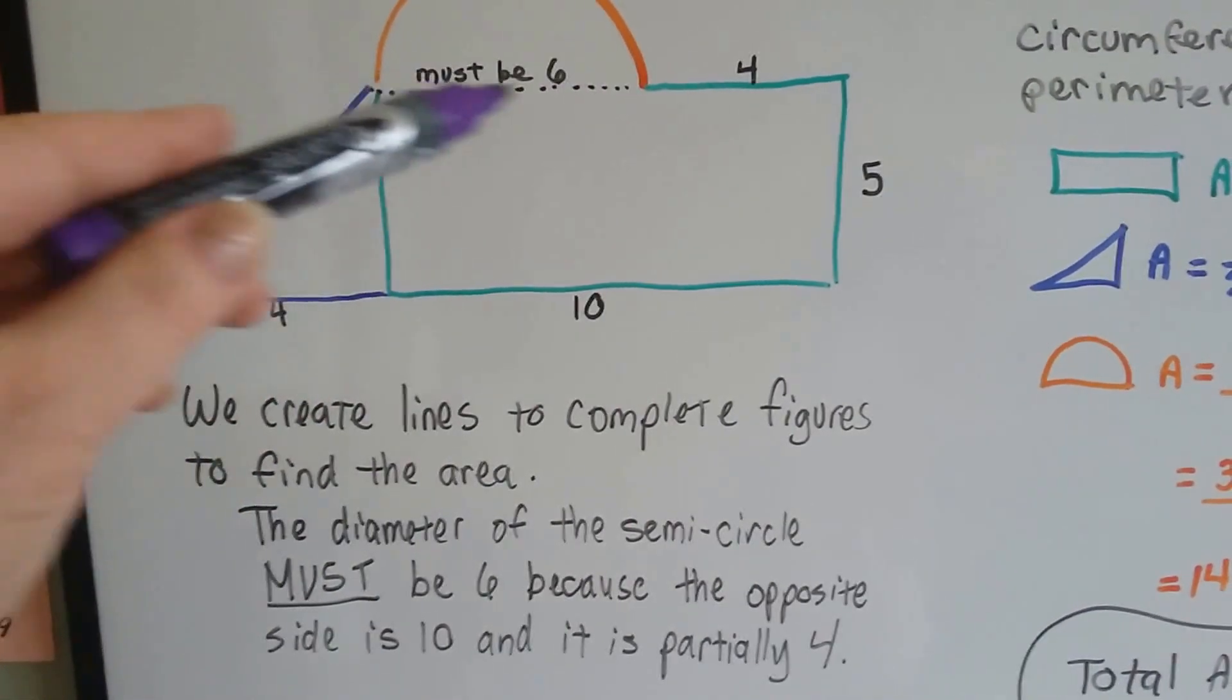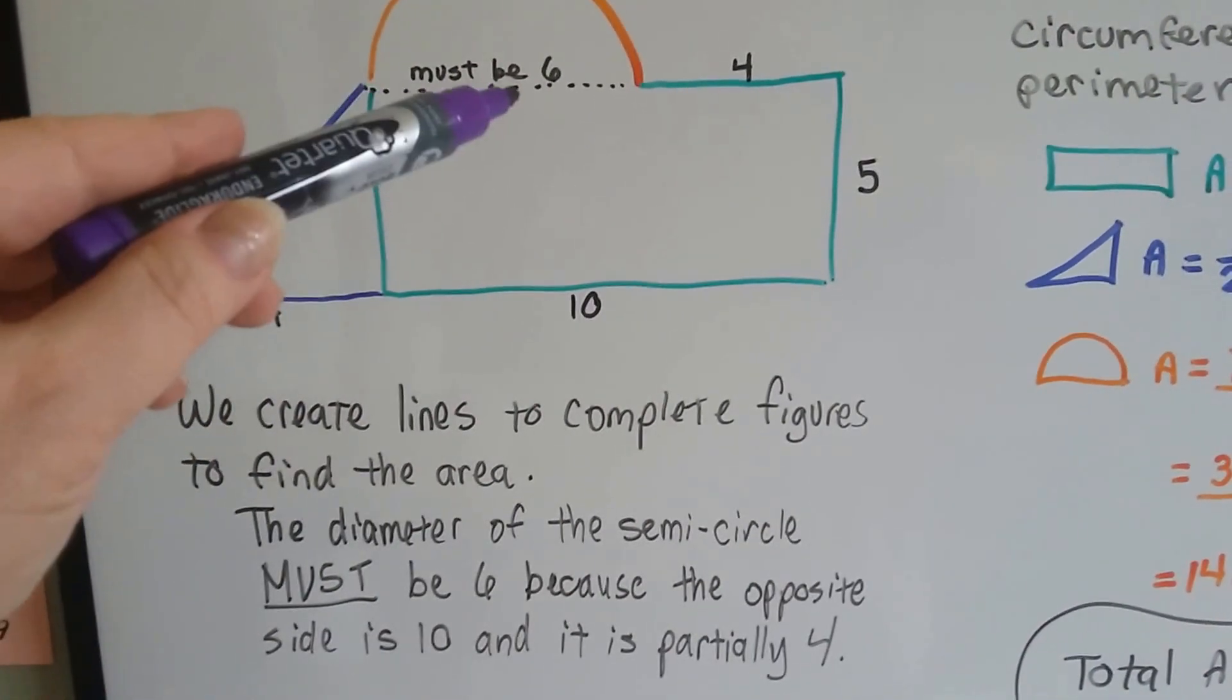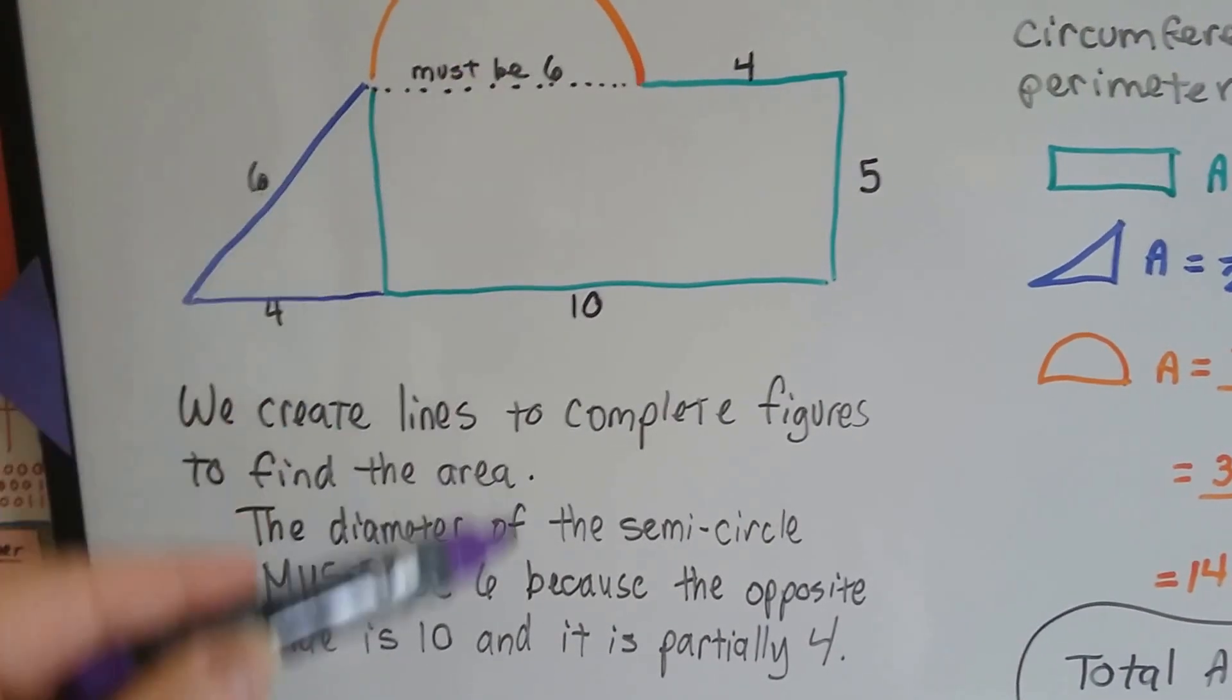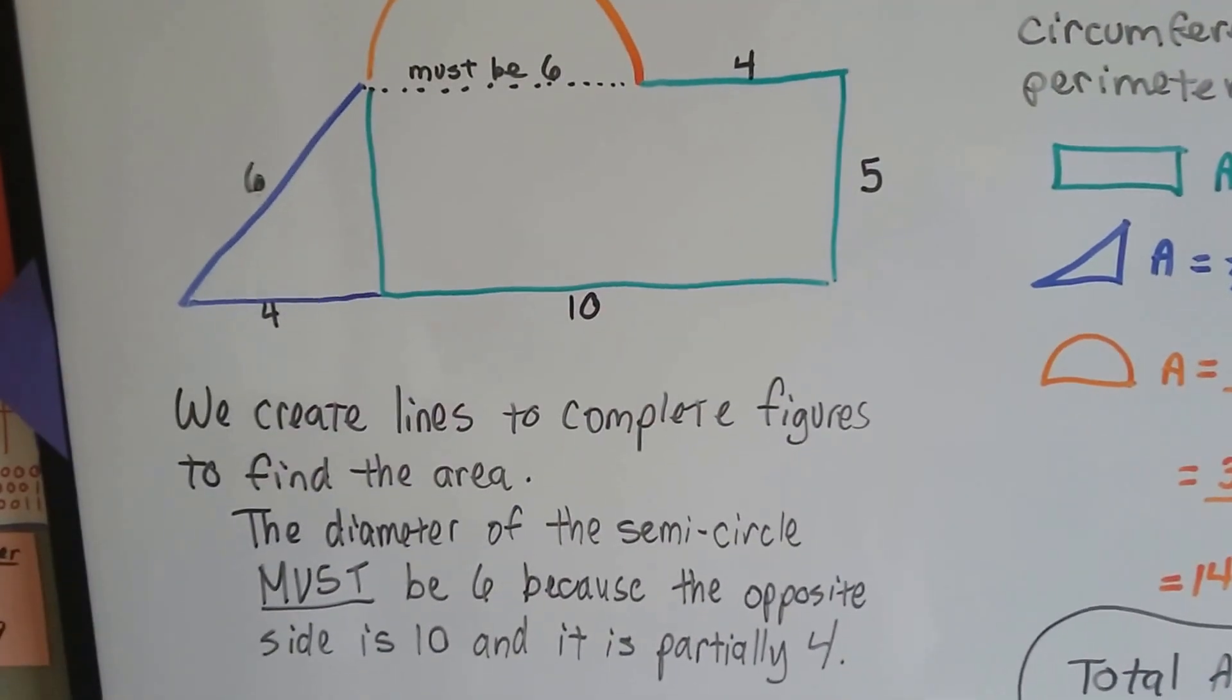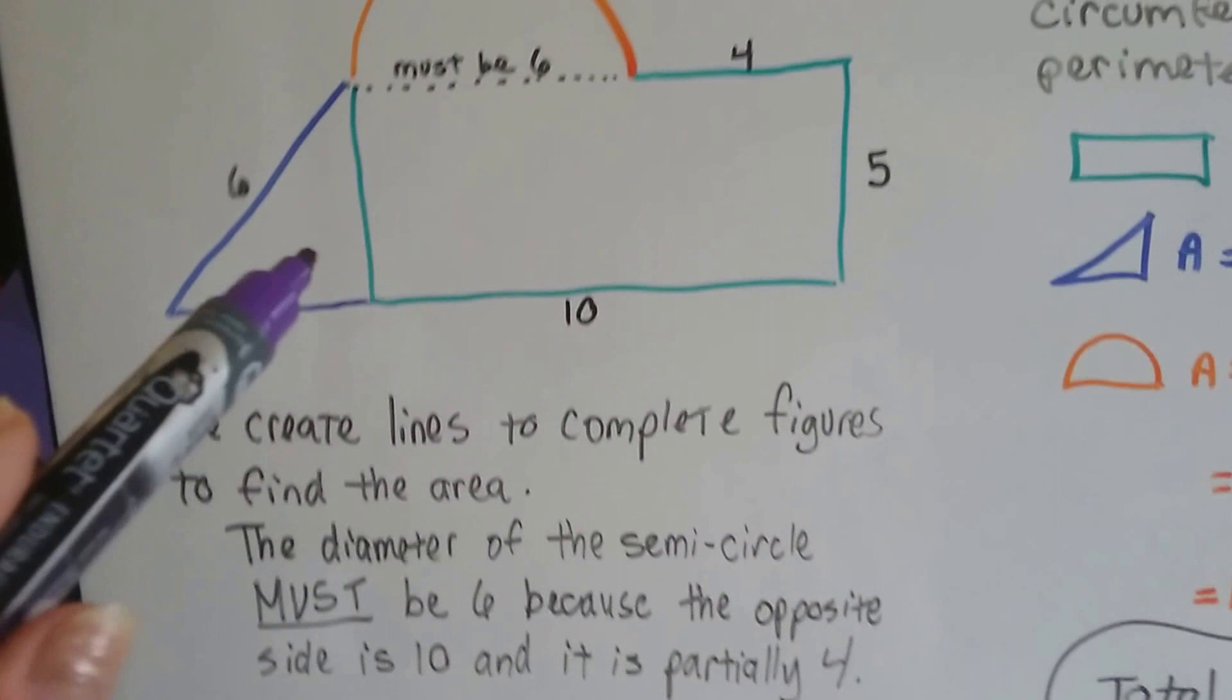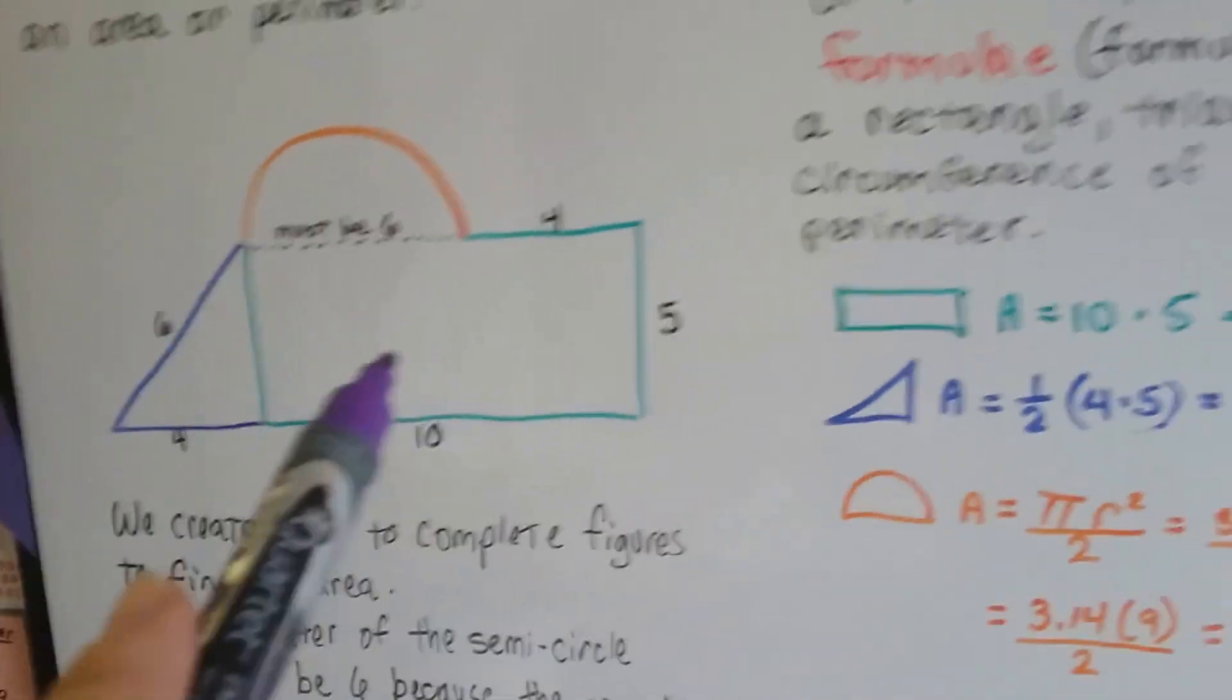And the diameter of the semicircle must be 6 because the opposite side is 10 and it's partially 4. So this must be a diameter of 6. So that would be a radius of half of it, which would be 3. So we need to think and figure this out. So this is the shape we're dealing with.